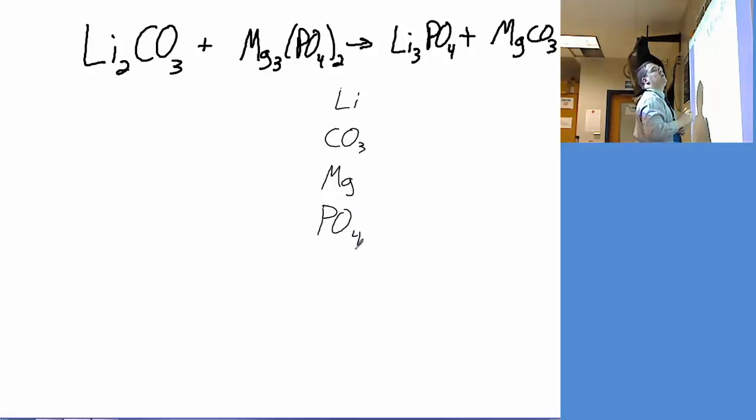Okay, so lithium's two on the left, three on the right - it needs more. Carbonates, now be careful. The three is part of carbonate's formula - that's what carbonate is. This does not mean we have three carbonates. Remember, with polyatomic ions, if there's no parentheses, that means you only have one of them.